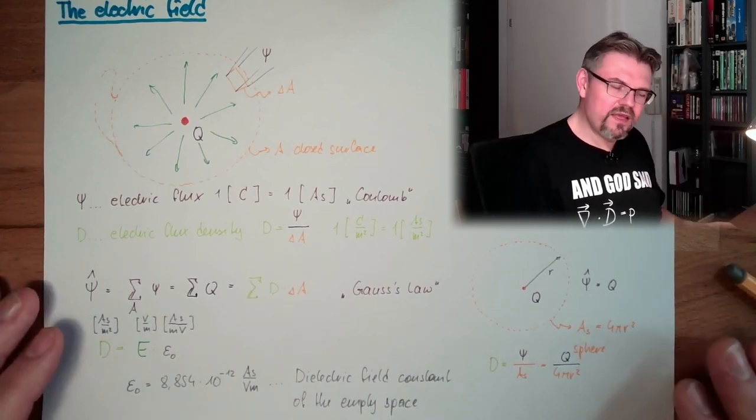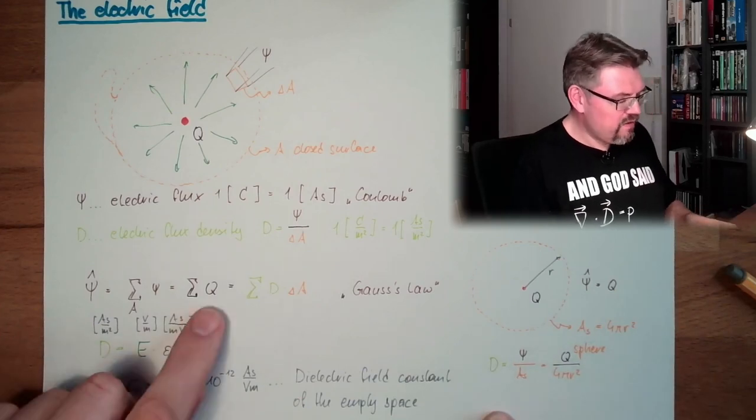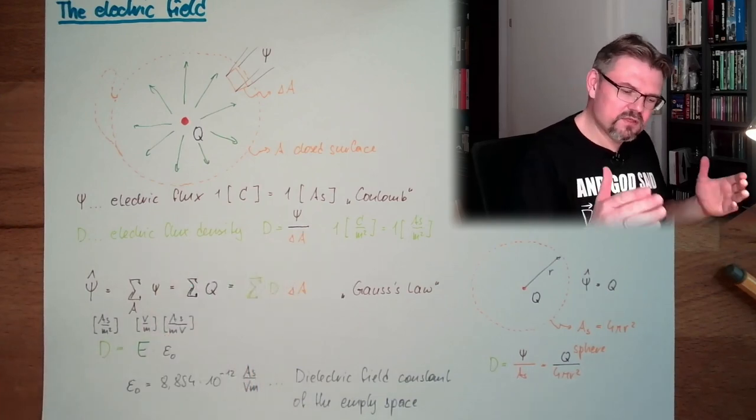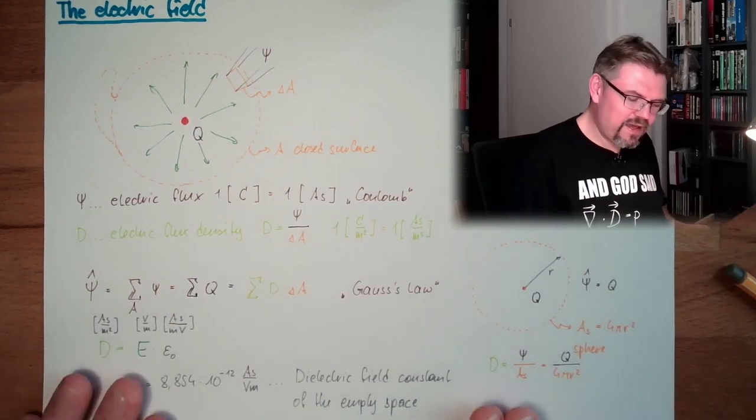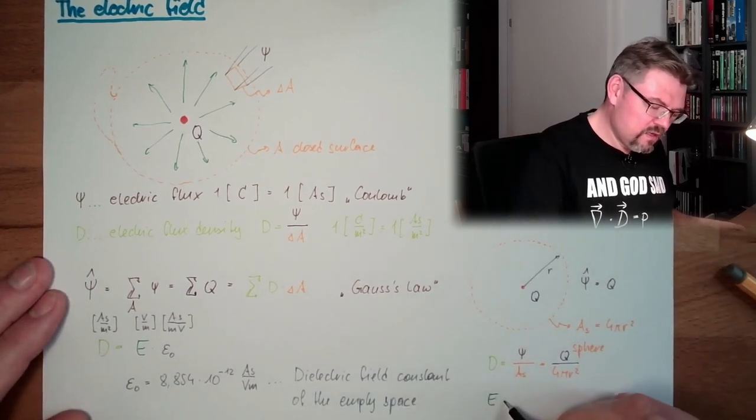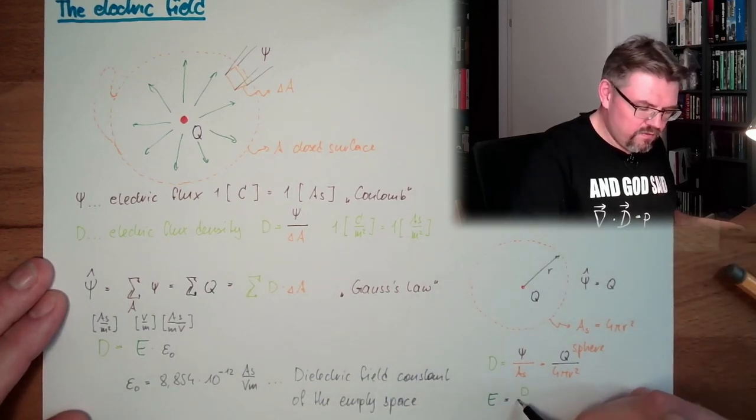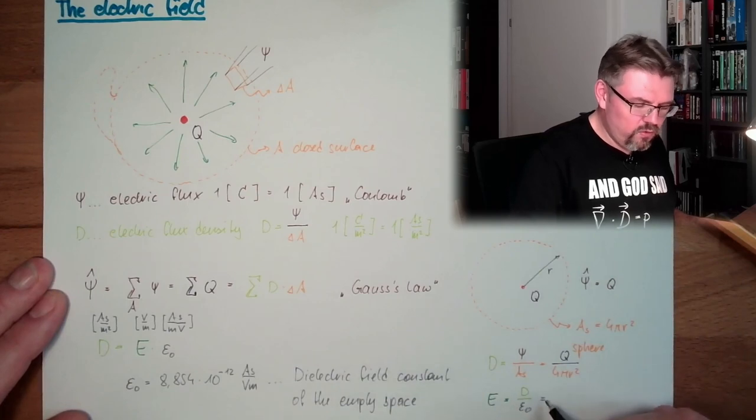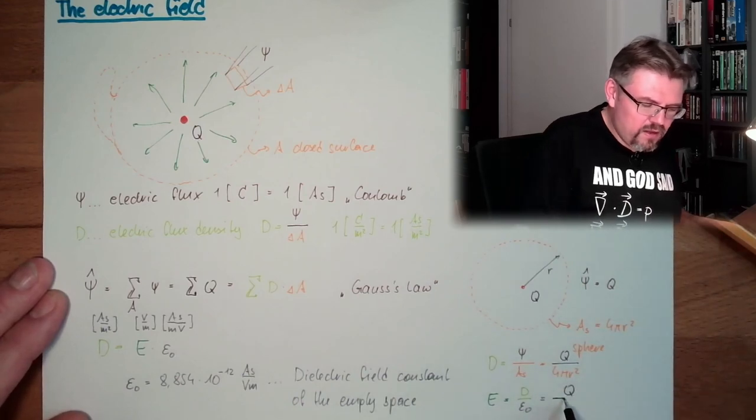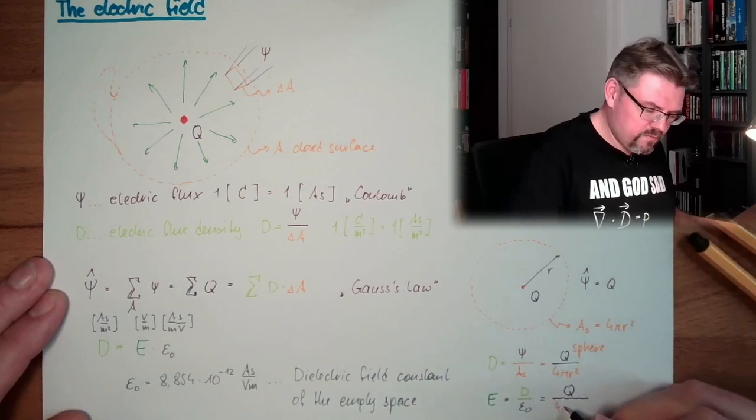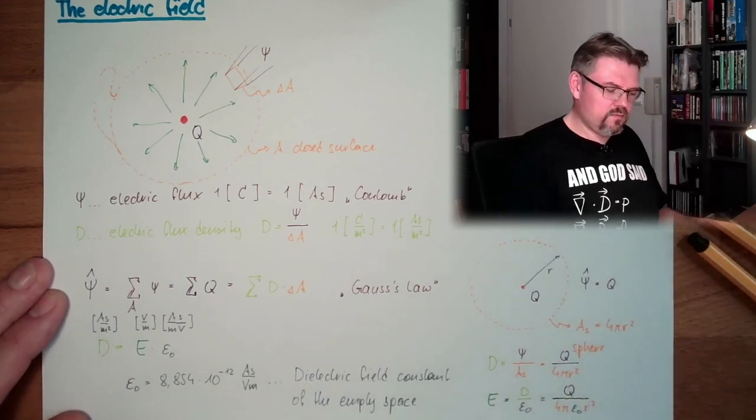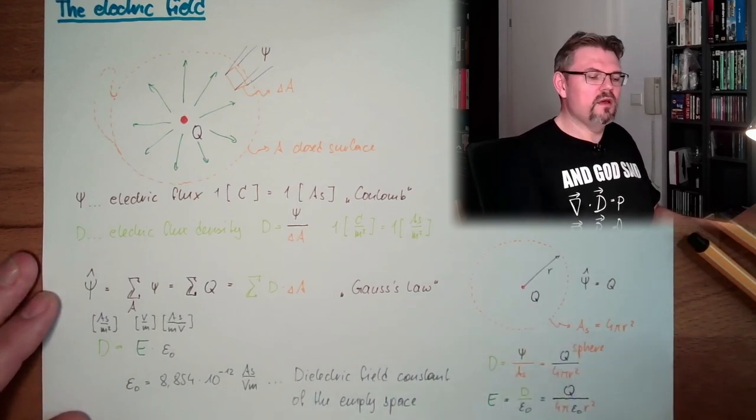Dielectric field constant, permittivity it's also called, and has this value. That's the constant value. And it seems like in English-speaking countries, or at least according to Wikipedia, they will divide here, they don't do this electric flux density there. I like it because it's one step between and it's simpler to remember. So because now the electric field E equals D divided by Epsilon zero. So we have, if we are using this as D, we have Q divided by 4 pi Epsilon zero r squared. That's the electric field around the point-shaped charge.